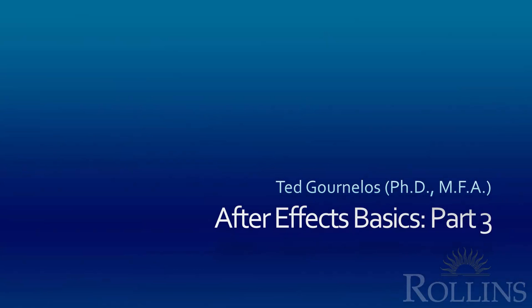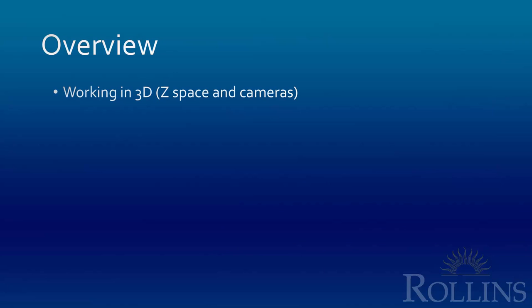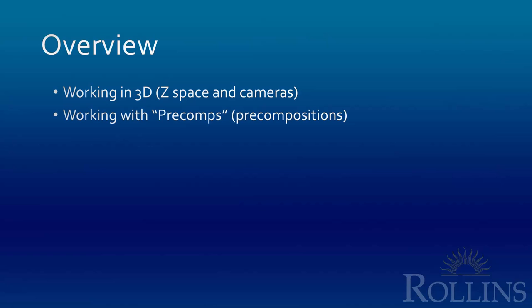This video is the third in our After Effects Basics series. We're going to work a little bit more in 3D and talk about z-space and cameras. We're also going to talk about working with pre-compositions — we've touched on that before when we brought one composition into another, but I'm going to show you some interesting ways of doing that.